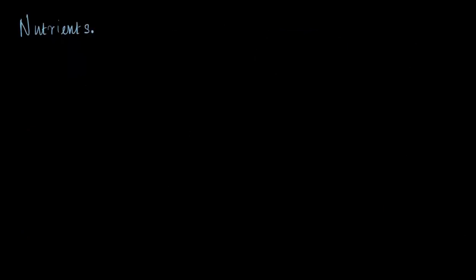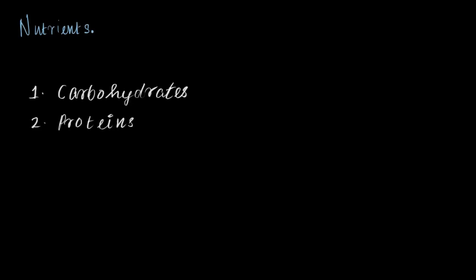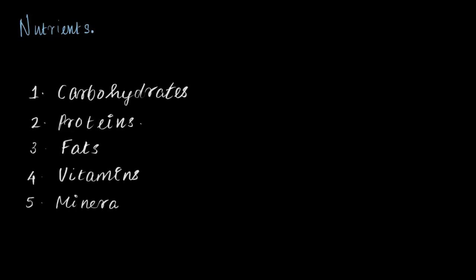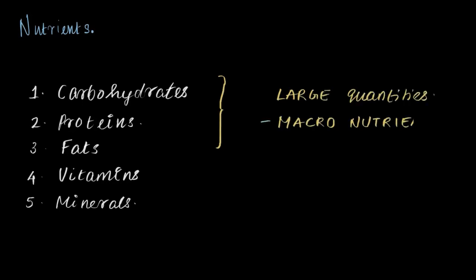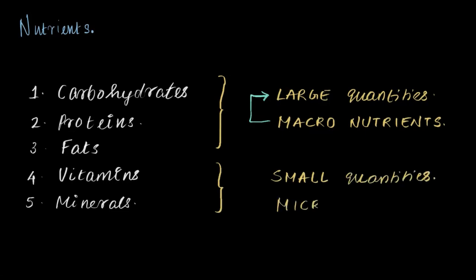Some of the nutrients are carbohydrates, proteins, fats, vitamins, and minerals. Carbohydrates, proteins, and fats are required by our body in large quantities and are known as macronutrients — macro meaning large. Vitamins and minerals are required in small quantities and are known as micronutrients — micro meaning small.